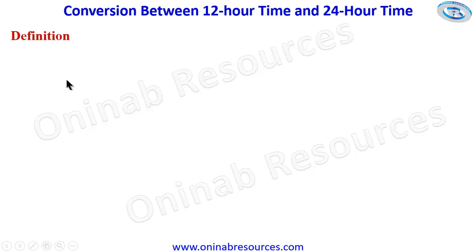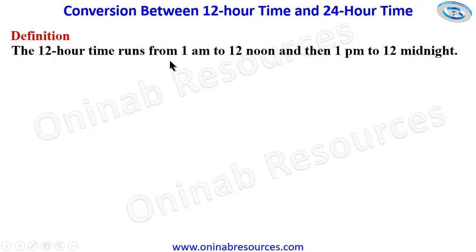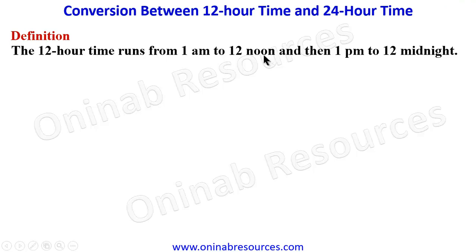We start with the definition. The 12-hour time runs from 1 a.m. to 12 noon, and then 1 p.m. to 12 midnight. In the night when it is 1, it will be written as 1 a.m. From there up to 12 noon, it is still read as a.m. So we have 1 a.m., 1:30 a.m., 7 a.m., up till 11:59 a.m.